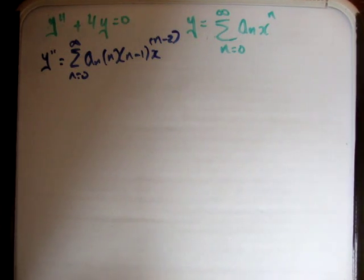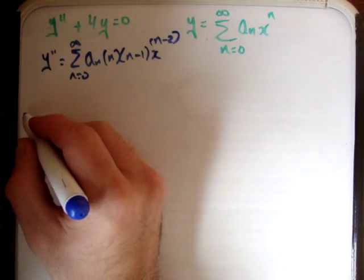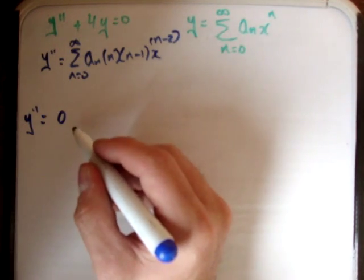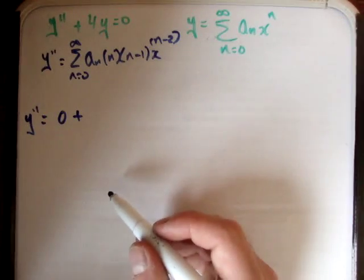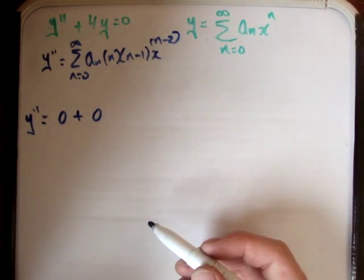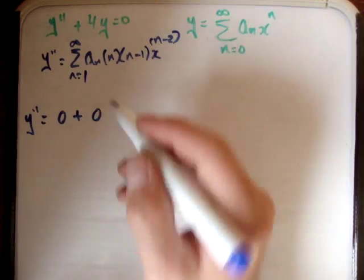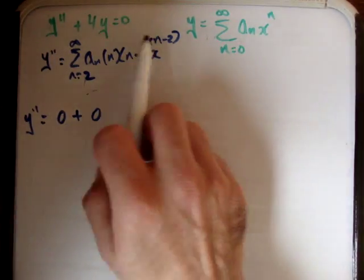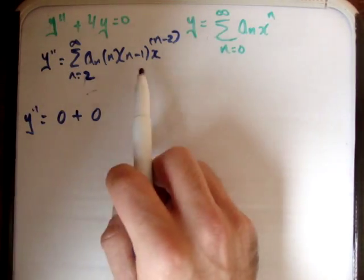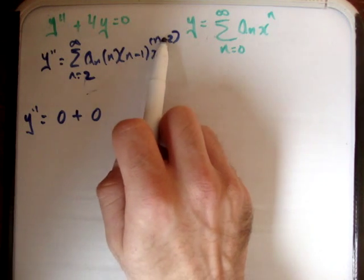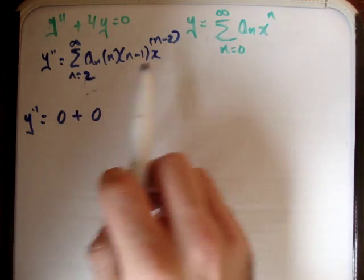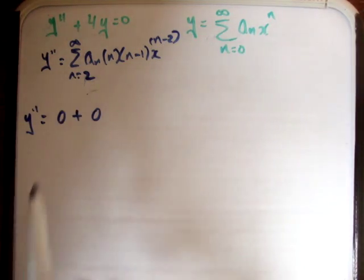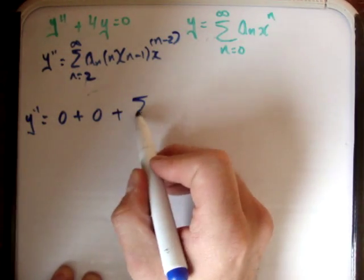We first write out the terms. For y double prime, when n equals 0 the first term is 0, when n equals 1 the second term is also 0. Then for n equals 2, if you shift these index values up by 2, then the power becomes x to the n and the lower limit becomes n equals 0.